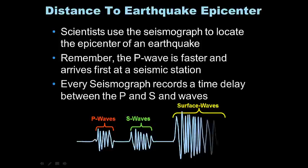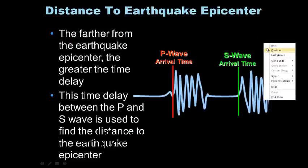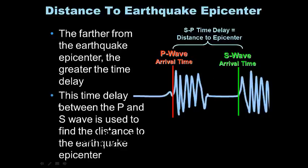Scientists use seismographs to locate the epicenter of an earthquake. Remember, the P wave is faster and is recorded first. The S wave is slower and is recorded second. Surface waves are the slowest and recorded last. Every seismograph records a time delay between the P and S waves. The farther from the earthquake epicenter, the greater the time delay. This time delay between the P and the S wave is used to find the distance to the earthquake epicenter.